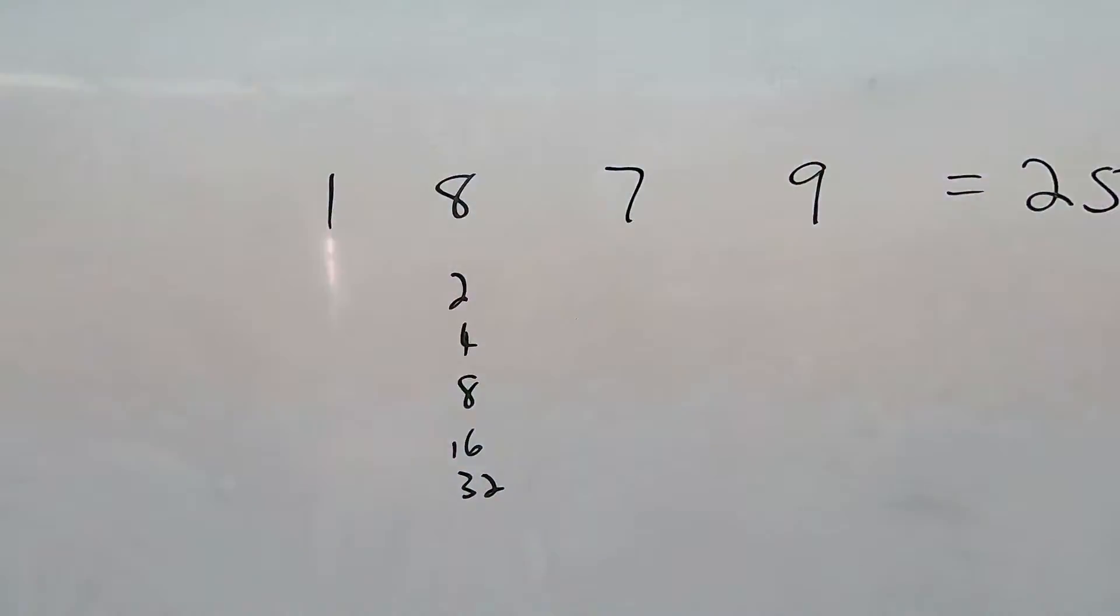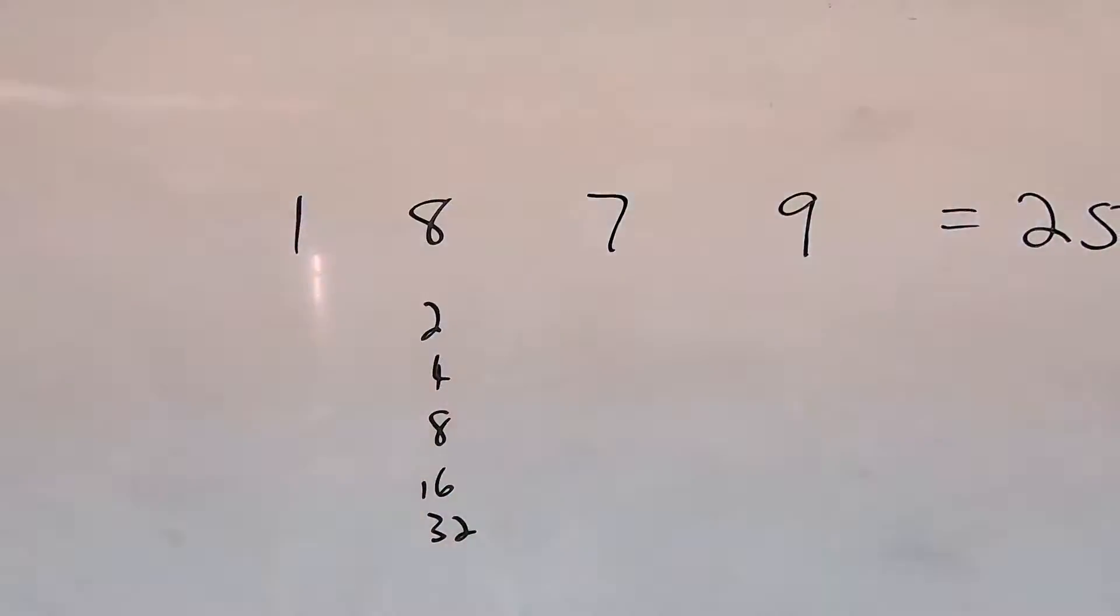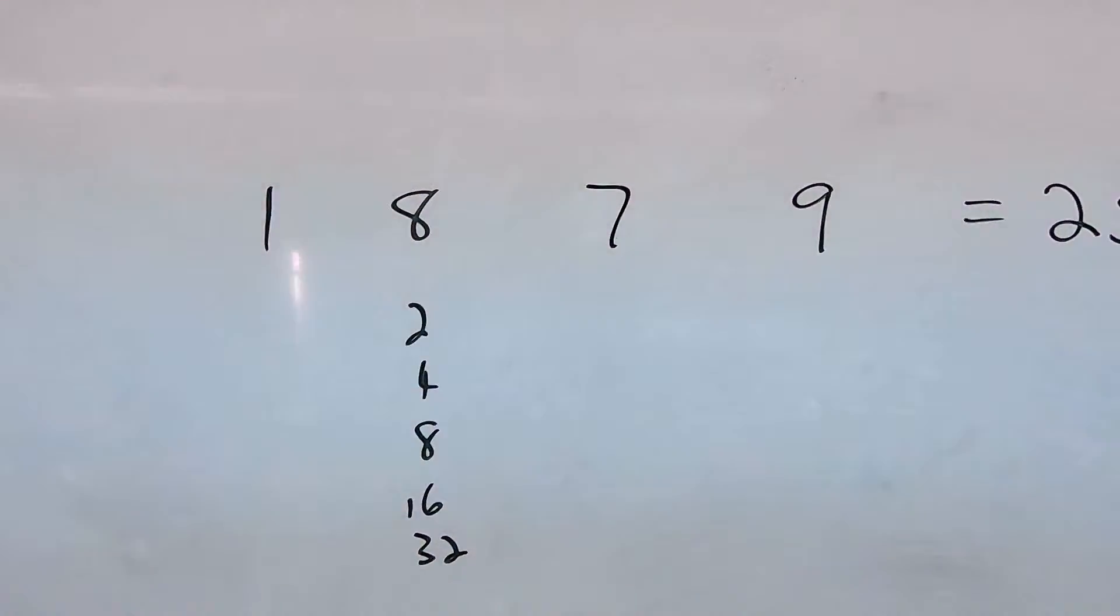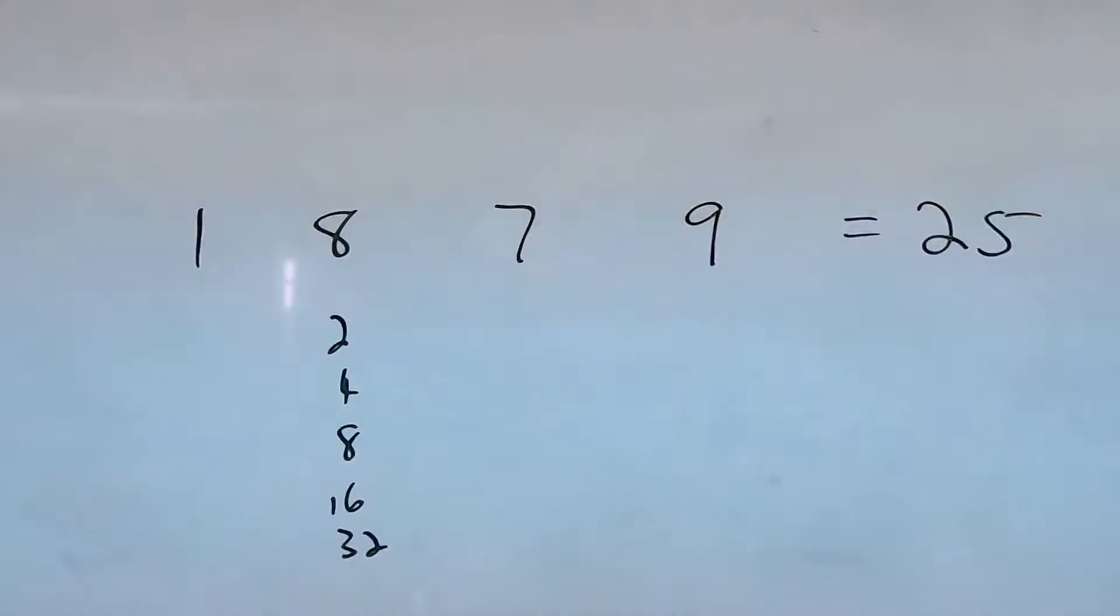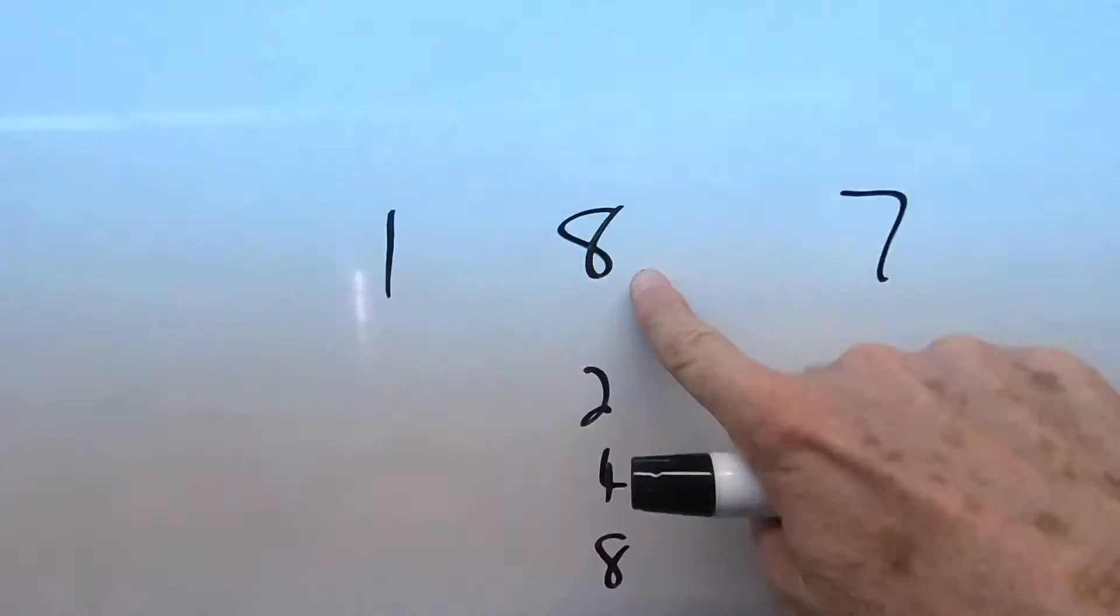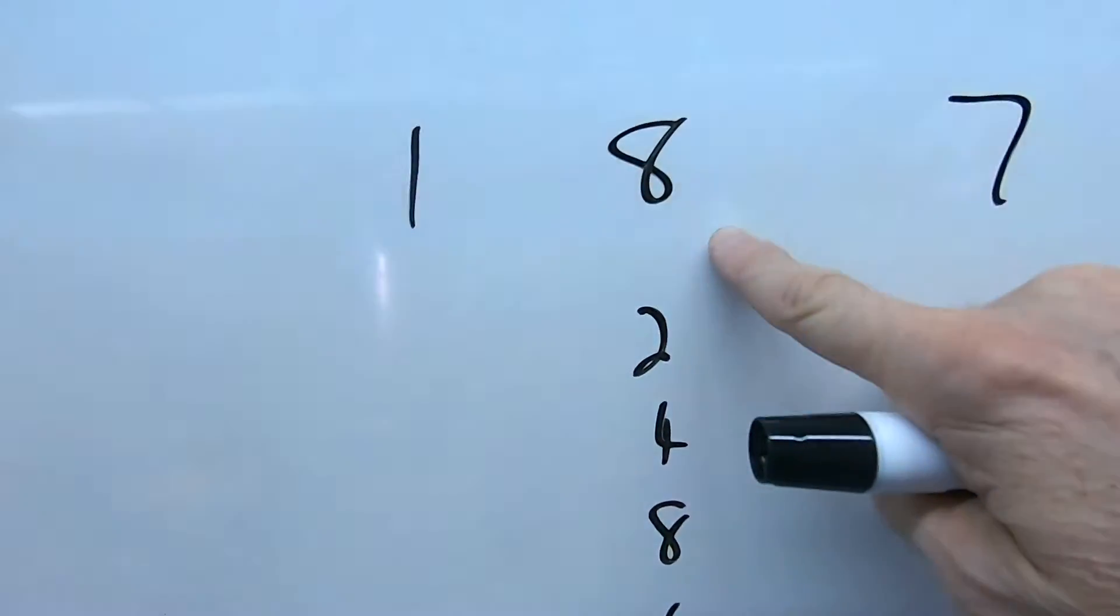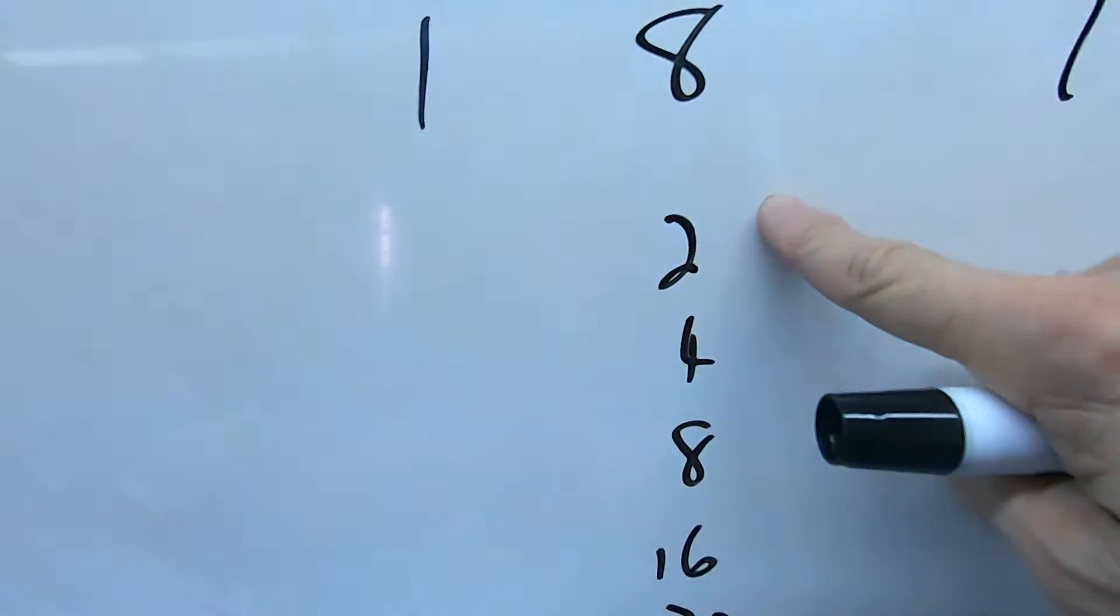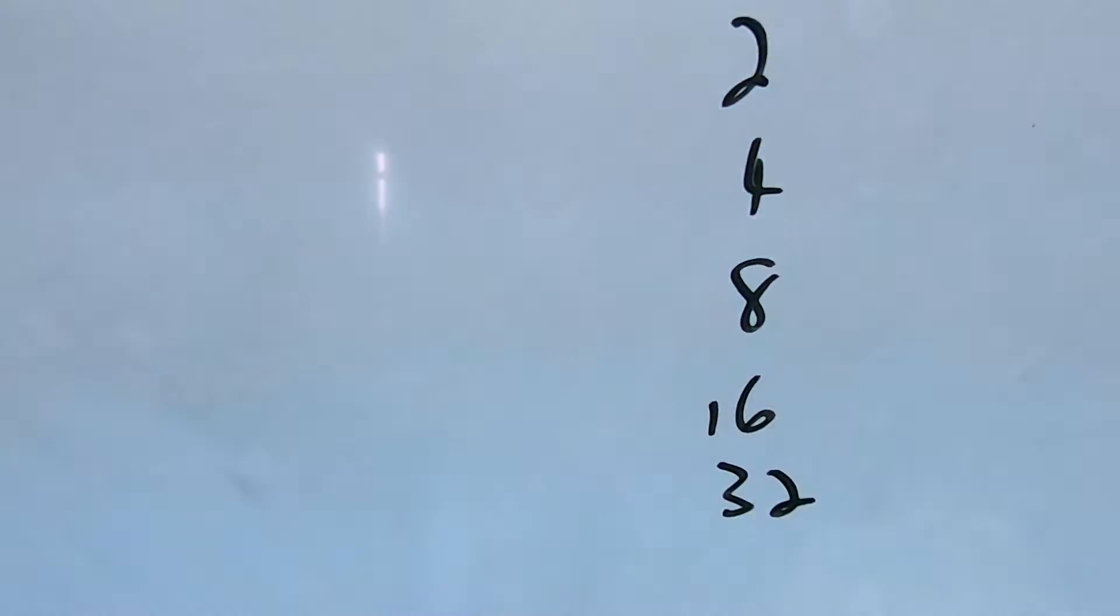For an example, say we're doing a project and we're using the digits 1, 8, 7, 9, the year Einstein was born, and we want to get to 25. The 8 is a good number, because from 8 we can get the cube root of 8 and take the different powers of 2, 4, 8, 16, 32, and so forth.